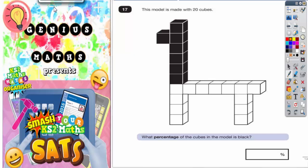Question 17. This model is made with 20 cubes, some black cubes and some white cubes. What percentage of the cubes in the model is black? Well, let's first of all write what fraction of the 20 cubes is black.